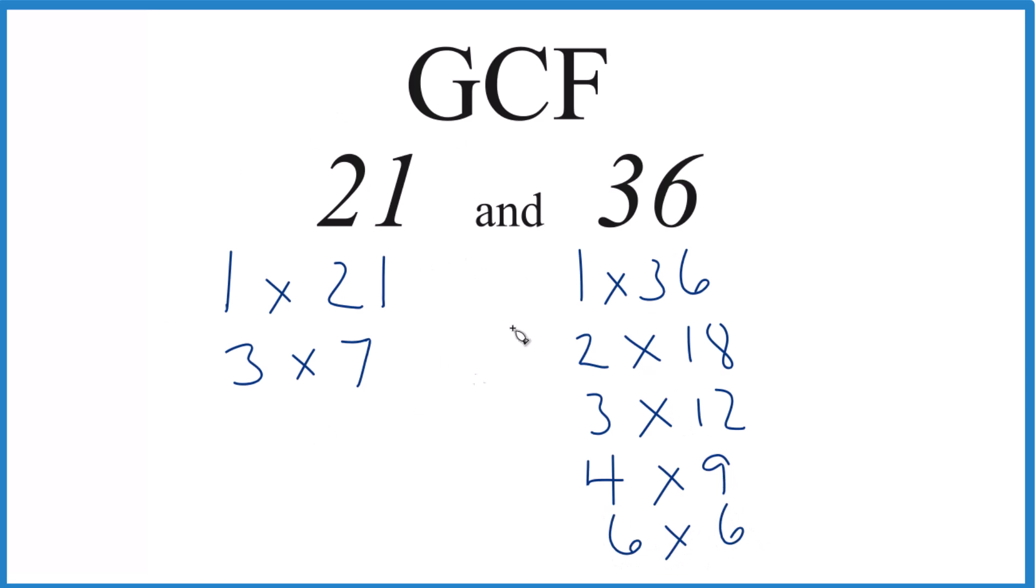So now we have the factors for 21 and 36. We can find what's in common. Well, 1 goes into 21 and 36, then 3 goes into 21 and 36 evenly. But that's it. So 3, that's going to be the greatest common factor between 21 and 36.